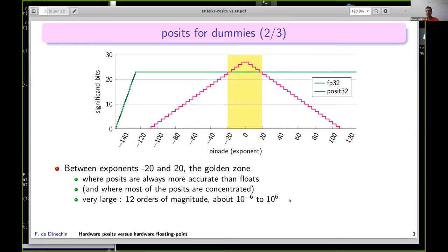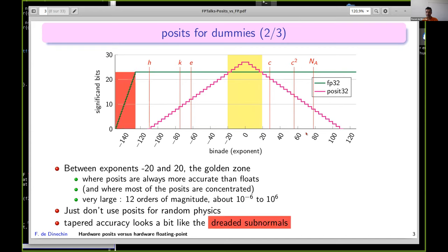It's quite a large area, 10 to the minus 6 to 10 to the 6. You can do a lot of interesting science here. However, you shouldn't use it to make random physics. The Planck constant, Boltzmann constant, speed of light, Avogadro's number are all represented with fewer bits in posits than in floats, just because they're outside of the golden zone with very large or very small exponents.